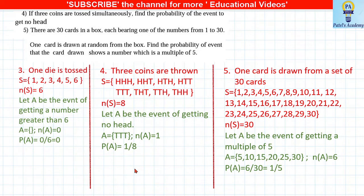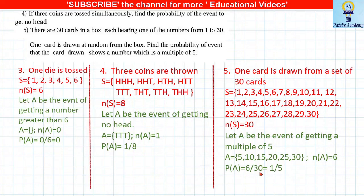There are 30 cards in a box numbered 1 to 30. Find the probability that the number drawn is a multiple of 5. Write down all 30 numbers; multiples of 5 up to 30 are 5, 10, 15, 20, 25, 30 — total 6 outcomes. P = 6/30 = 1/5.